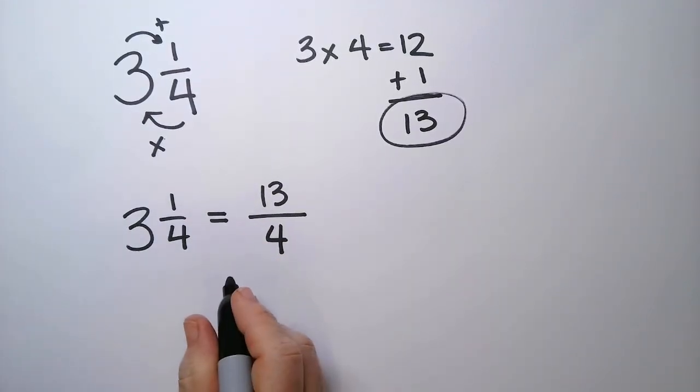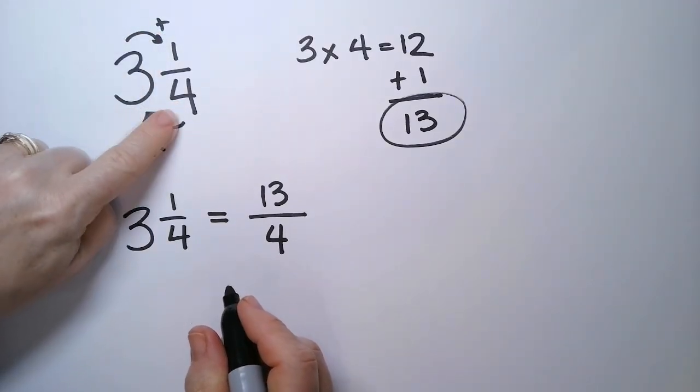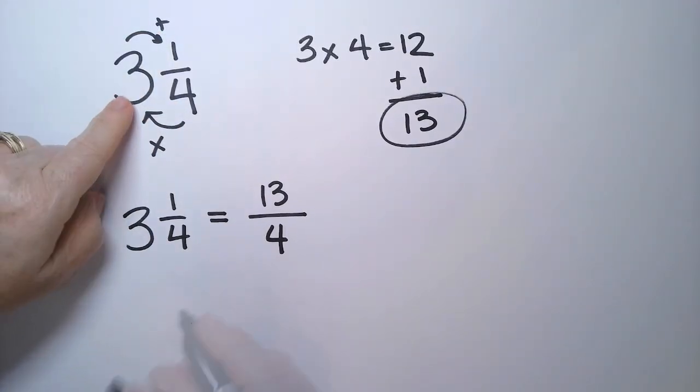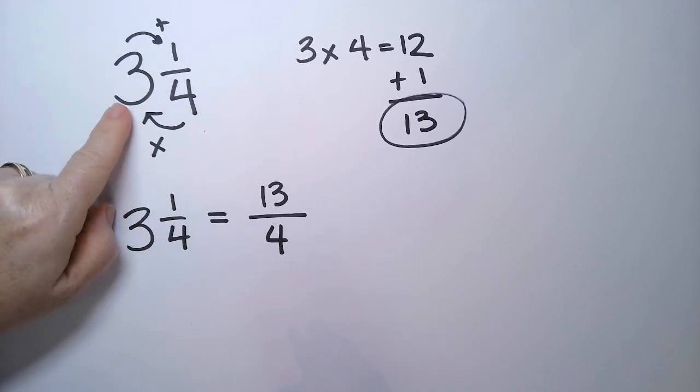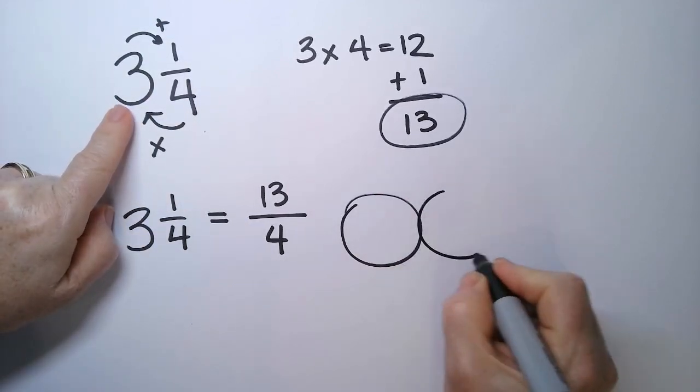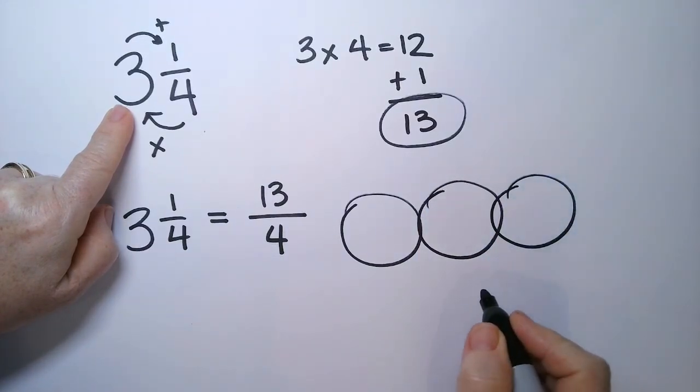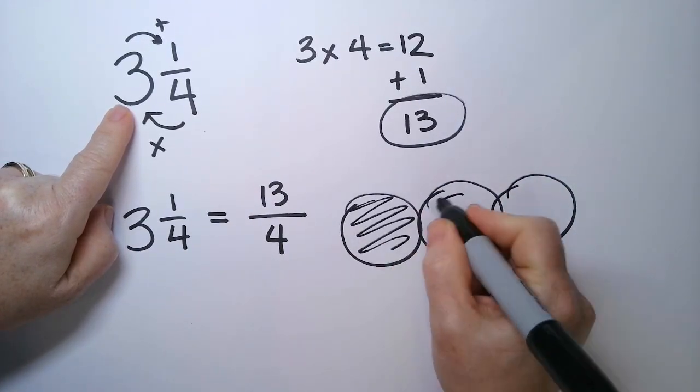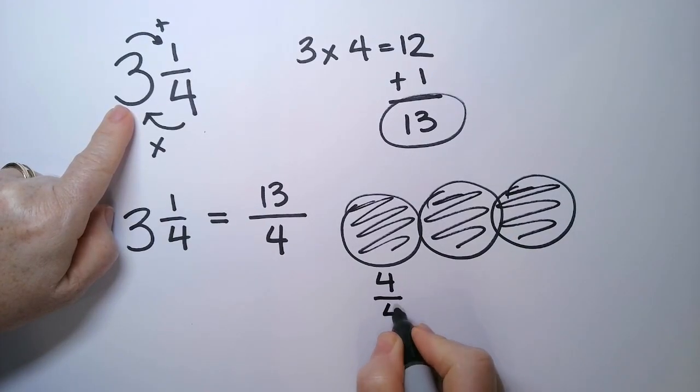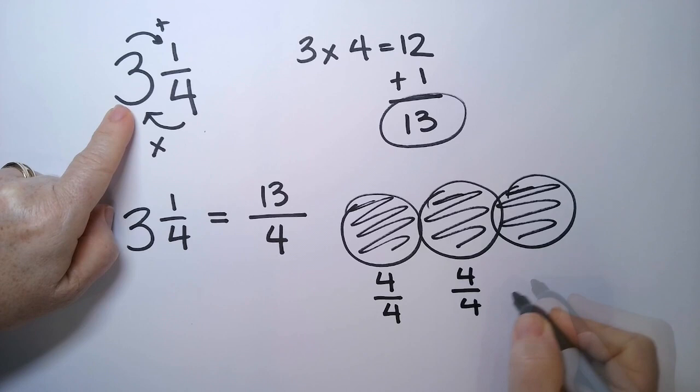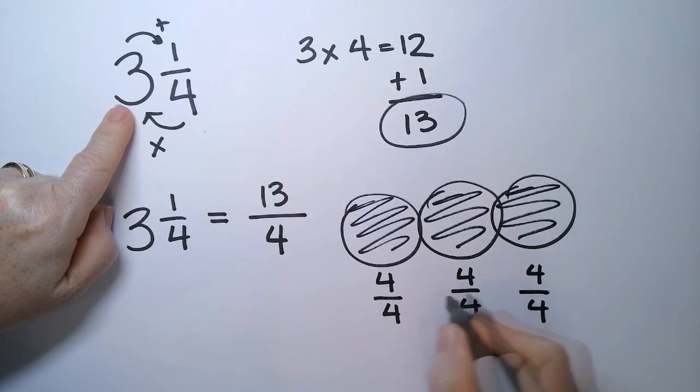And the reason this works, why we multiply and then add, is because 3 is, for 3¼, if I said I need 3¼ cup flour, you know that this is going to be 3 whole cups, right? So, this is 1 cup, 2 cups, 3 cups, great. Another way of writing this is 4 over 4, plus 4 over 4, plus 4 over 4, and we have that 3 times.